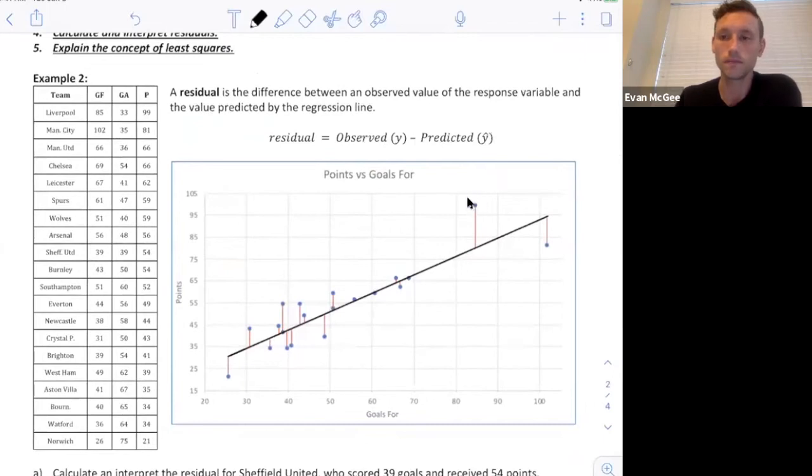If we look at this point right here, this point is a coordinate. It has an x and a y value. The points on the line are all going to be an x and a y hat value, because this line will only give us predicted values. The raw actual data, for instance, this is Liverpool, who scored 85 goals and had 99 points.